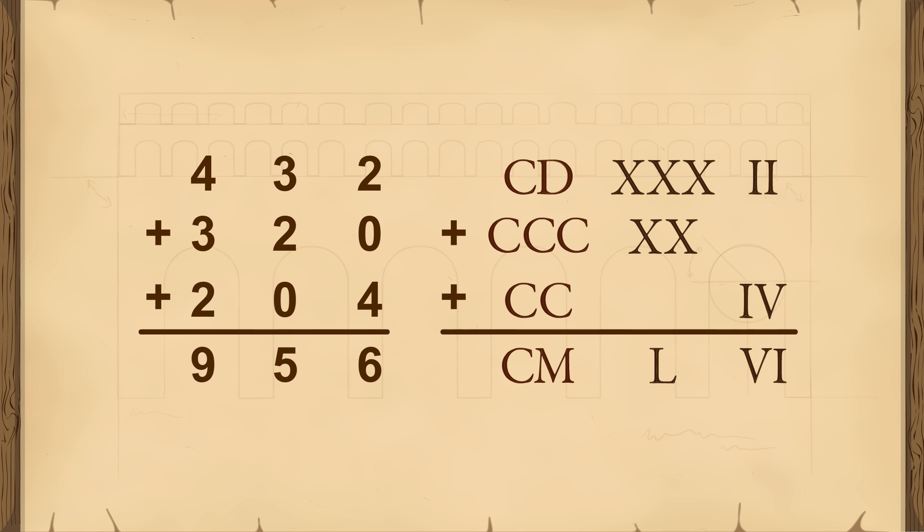The first difference that is apparent is that the Roman number system had no symbol for 0. An even more important difference is that our modern number system uses the same symbol to represent different values depending on its position in the number. For instance, in this problem, the number 2 represents 2, 20, and 200 depending upon which column the 2 is in. On the other hand, in the Roman system, 2, 20, and 200 are represented by different symbols.